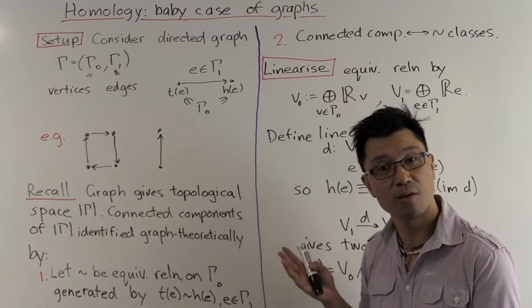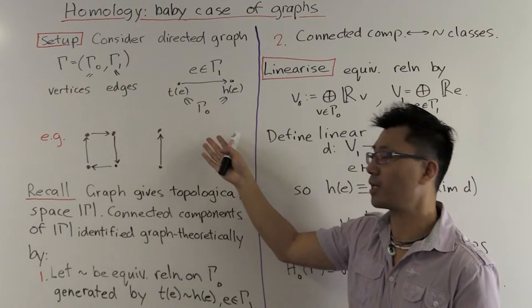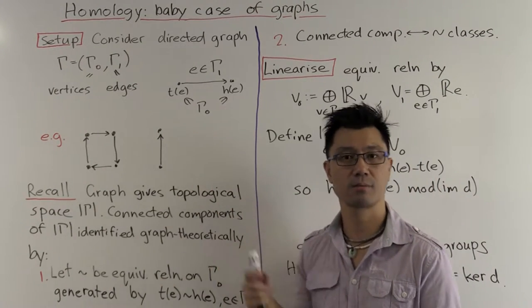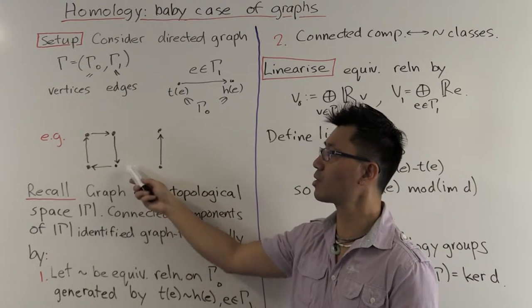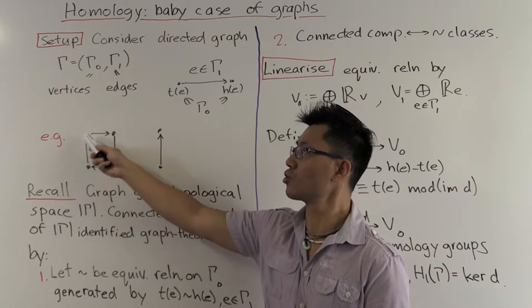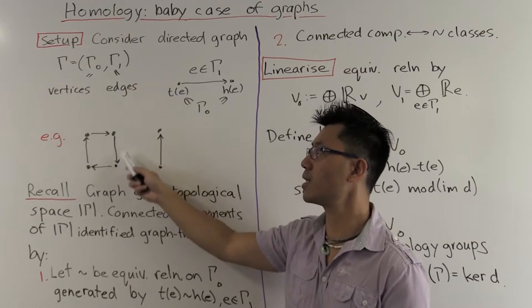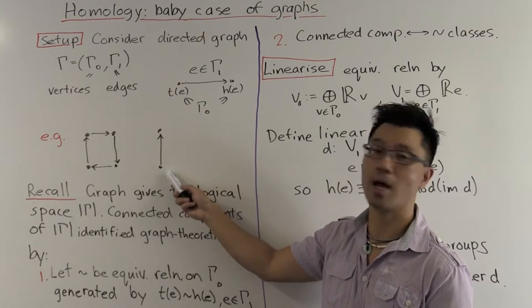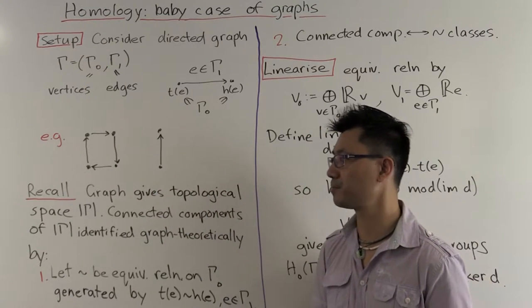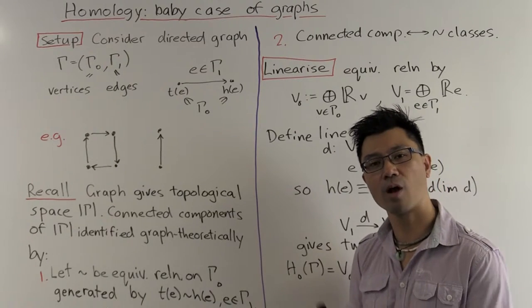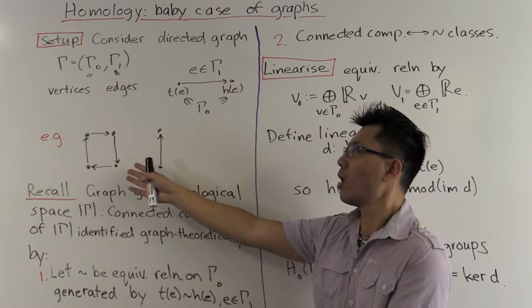So where does the topology come in? So recall that given any such graph, it gives us a topological space. So this one here, for example, is just you just join these all up to give you a square inside here, union a line segment.